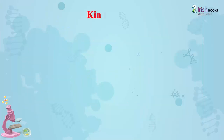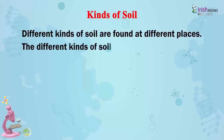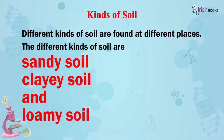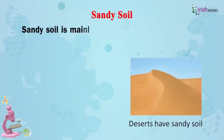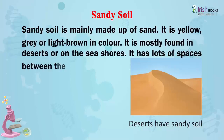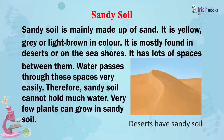Kinds of soil. Different kinds of soil are found at different places: sandy soil, clay soil, and loamy soil. Sandy soil is mainly made up of sand. It is yellow, grey, or light brown in colour, and is mostly found in deserts and on sea shores. It has lots of spaces between particles, so water passes through very easily. Therefore, sandy soil cannot hold much water, and very few plants can grow in it.